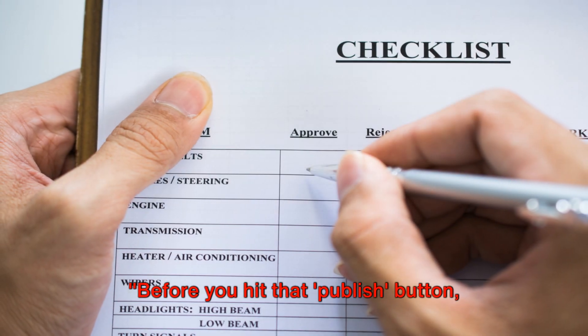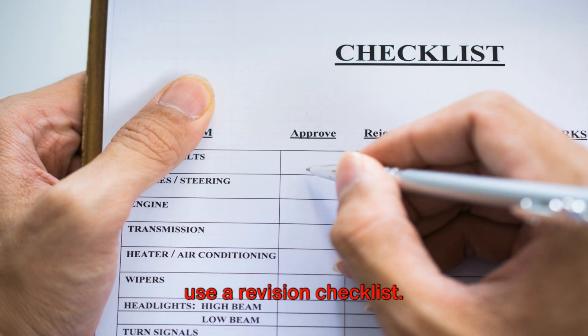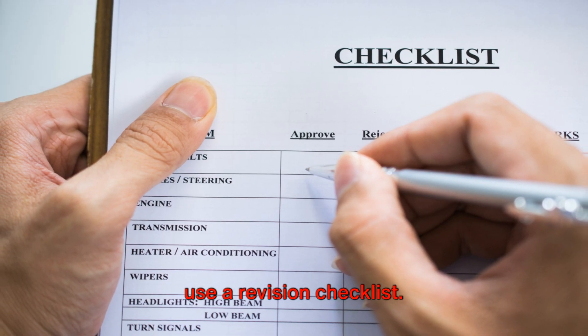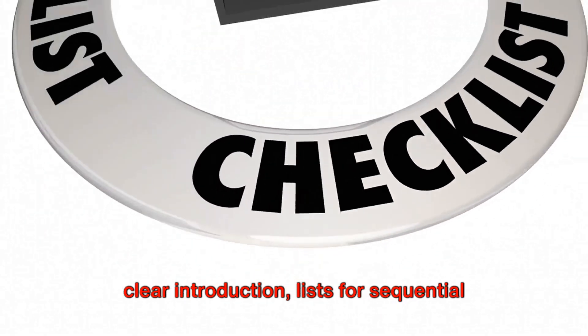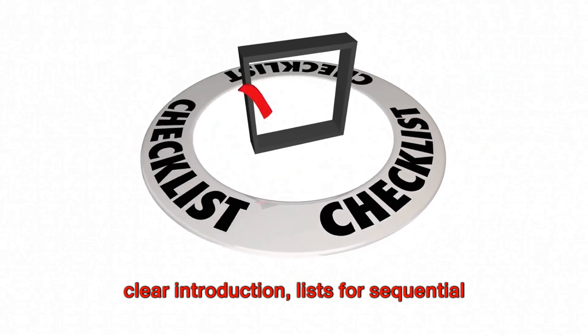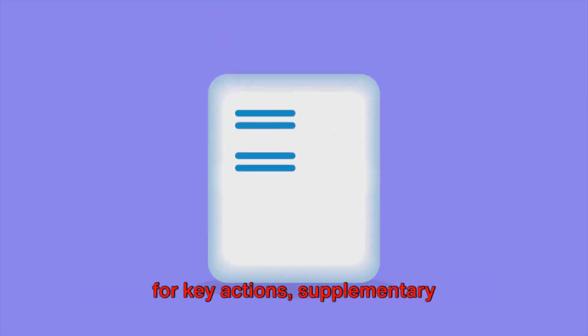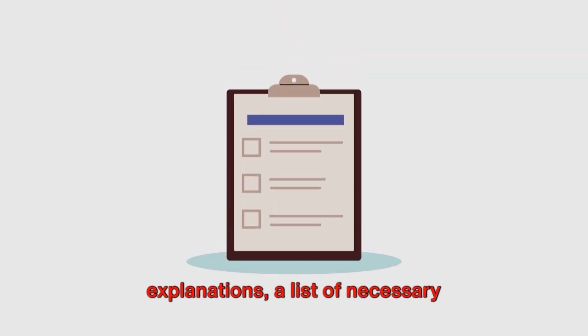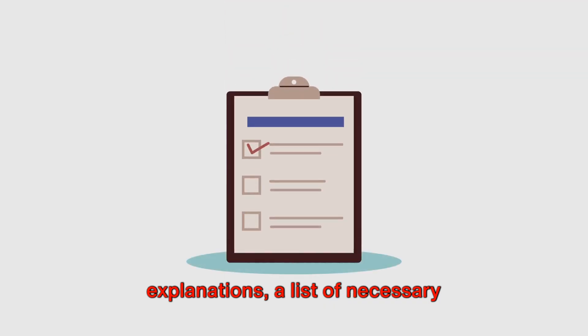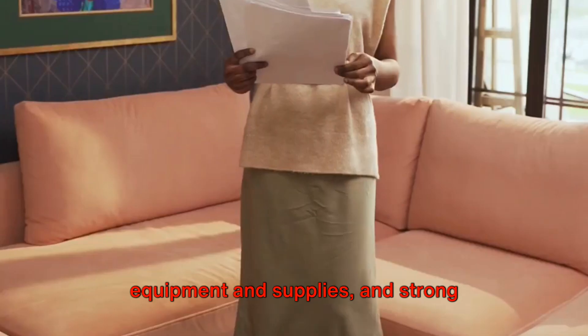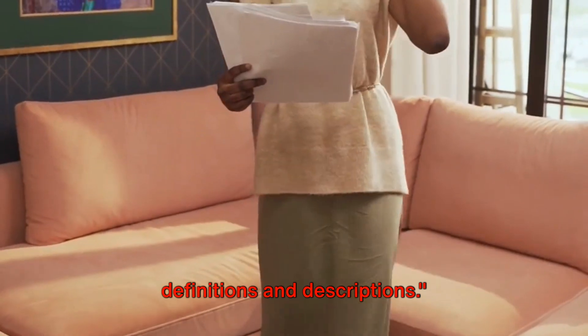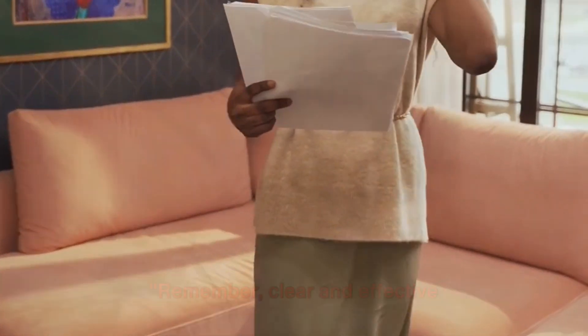Before you hit that publish button, use a revision checklist. Ensure you have real instructions, a clear introduction, lists for sequential steps, headings and subheadings, graphics for key actions, supplementary explanations, a list of necessary equipment and supplies, and strong definitions and descriptions.